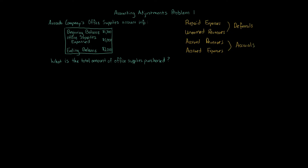Accruals are the opposite of deferrals. With accruals, you're recording a revenue you have yet to collect, or recording an expense you have yet to pay. Now, with office supplies, we're given beginning balance, ending balance, the amount of expense during the period, and we're asked about the office supplies purchased. Thinking about the four types of adjustments, where would this fit?